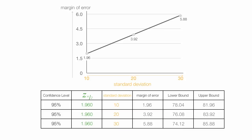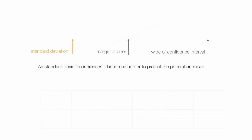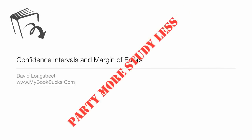So what does all this mean? As the standard deviation increases, so does the margin of error, and the width of the confidence interval goes up as well. As standard deviation increases, it becomes harder to predict the population mean.